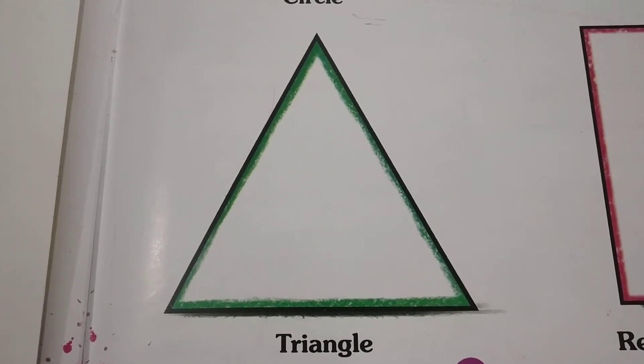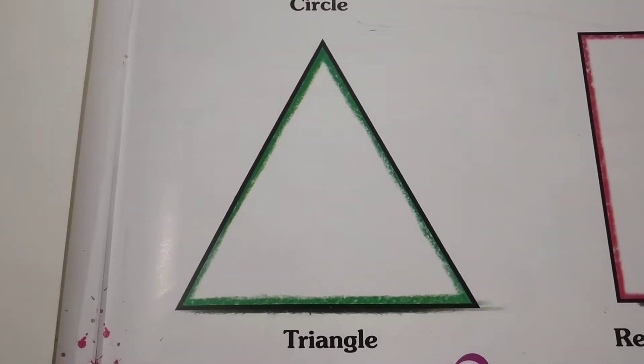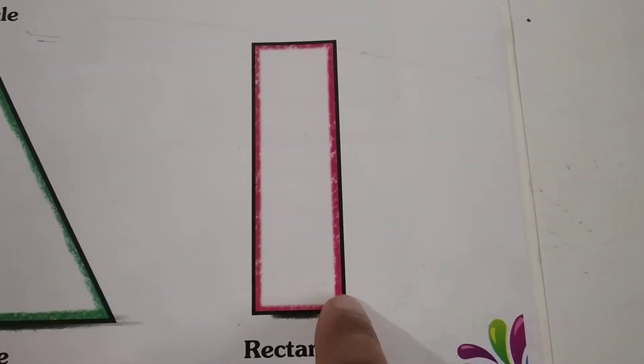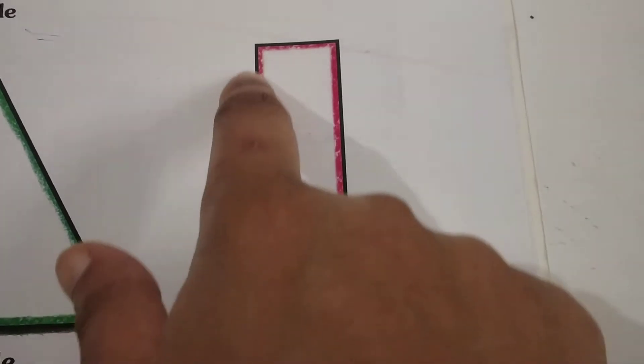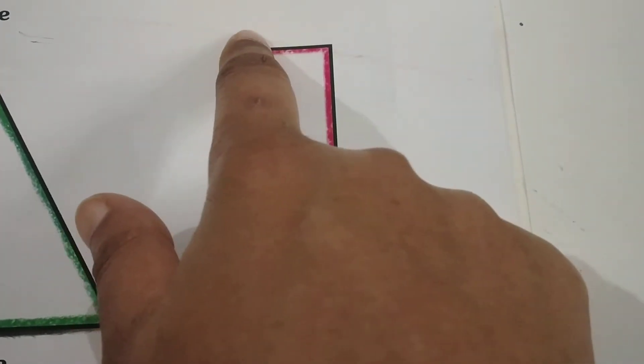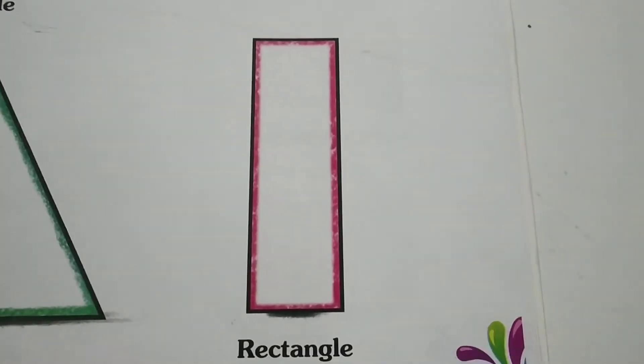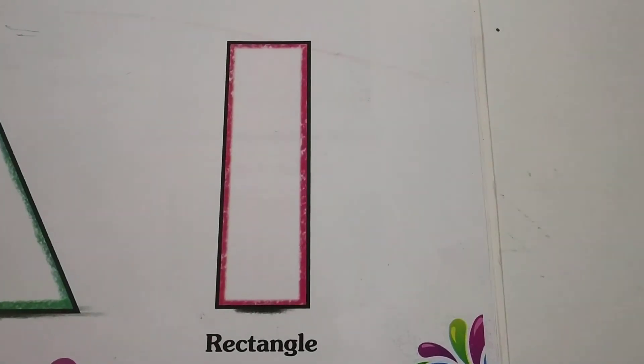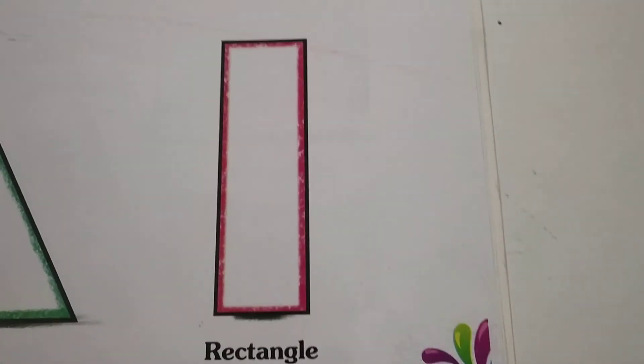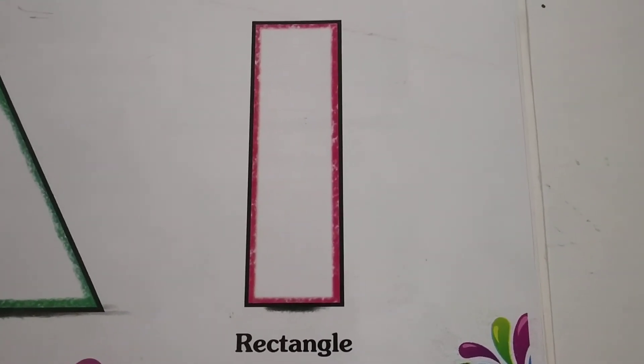Next is rectangle. Repeat after me: rectangle, rectangle. This is a rectangle, like your mama's phone. A mobile phone in shape is like a rectangle, so the shape of a mobile is rectangle.